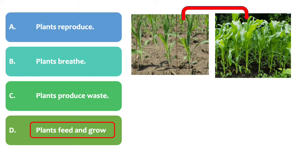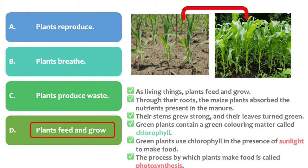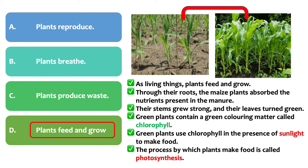This is the answer. As living things, plants feed and grow. Through their roots, the maize plants absorbed the nutrients present in the manure. Their stems grew strong, and their leaves turned green. Green plants contain a green coloring matter called chlorophyll. Green plants use chlorophyll in the presence of sunlight to make food. The process by which plants make food is called photosynthesis.